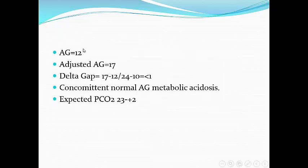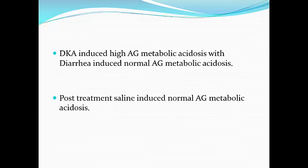Anion gap is 12; adjusted anion gap for albumin is 17 — so it is high anion gap metabolic acidosis. Delta gap: (17 − 12) / (24 − 10) is less than 1, so there is concomitant mixed normal anion gap metabolic acidosis, meaning much more bicarbonate is lost than expected from high anion gap alone. The expected PCO2 is almost as found, so respiratory compensation is appropriate. Conclusion: diabetic ketoacidosis caused the high anion gap metabolic acidosis, and gastroenteritis/diarrhea caused the normal anion gap metabolic acidosis.